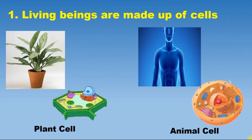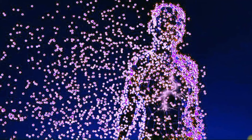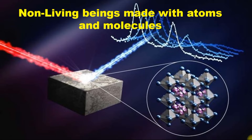The first characteristic is that all living beings are made up of cells. Observe these pictures — a cell is the basic unit of any living being. For example, the human body is made up of trillions of cells. Similarly, all living beings are made up of cells, whereas non-living beings are made up of atoms and molecules.